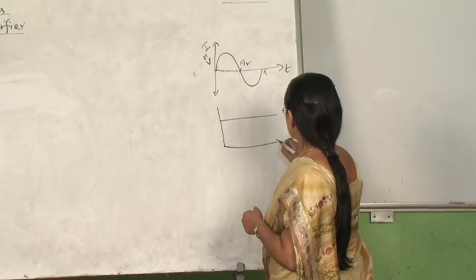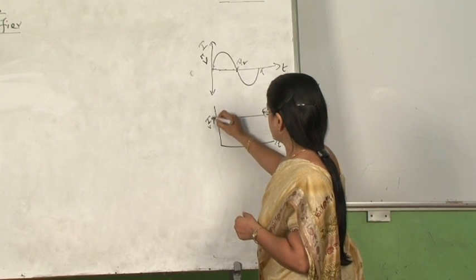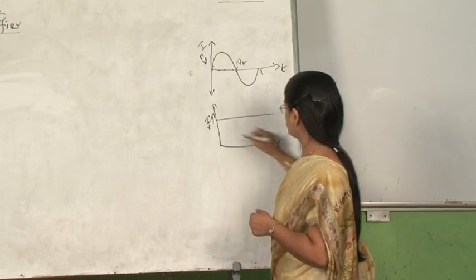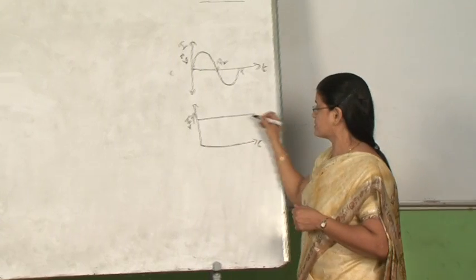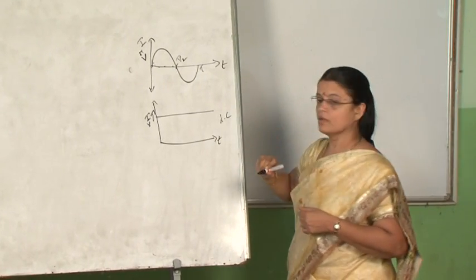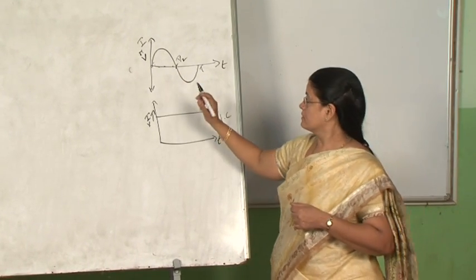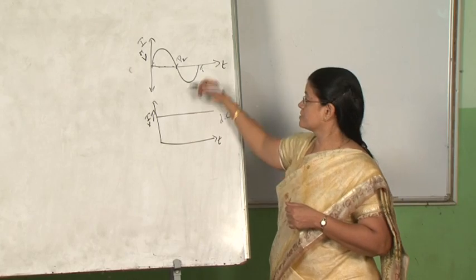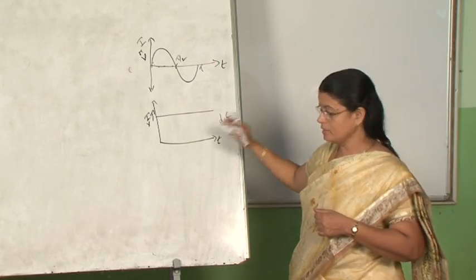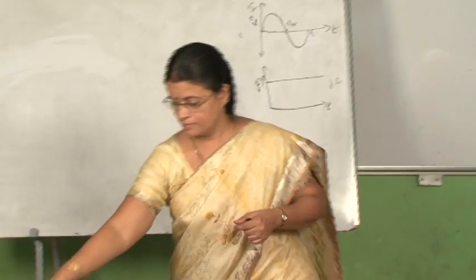As time passes, the current or voltage which is not changing its magnitude as well as direction is DC. So the rectifier is a device which converts alternating voltage or current to direct voltage or current.